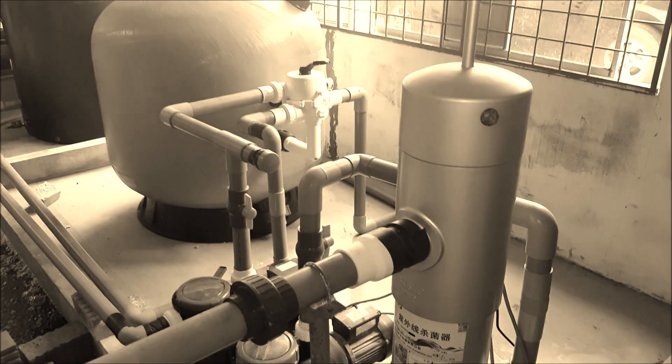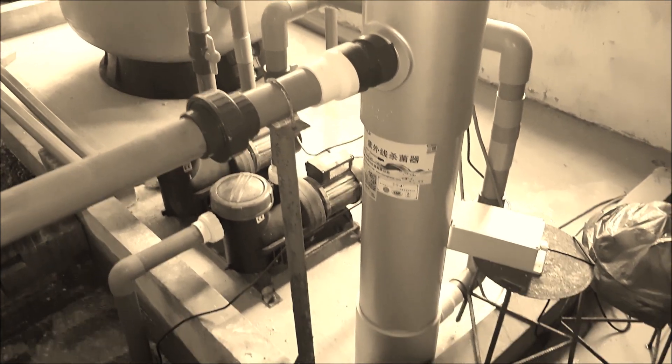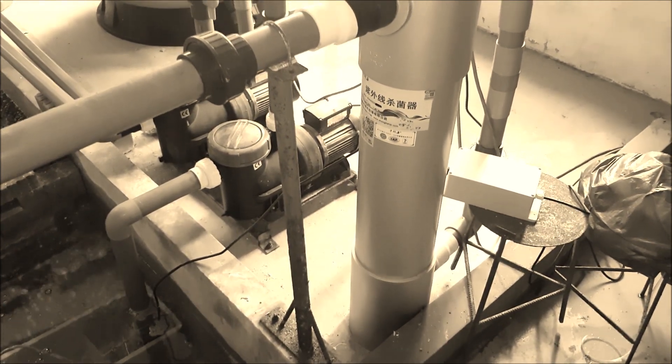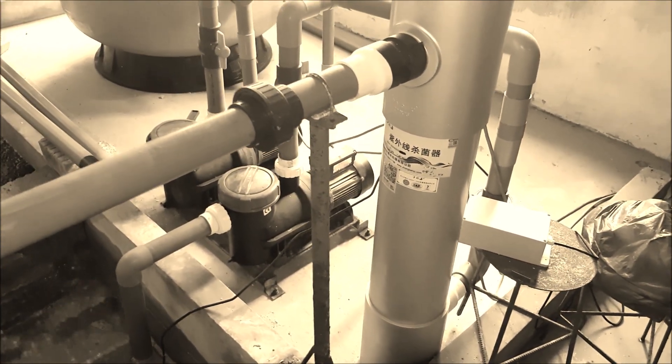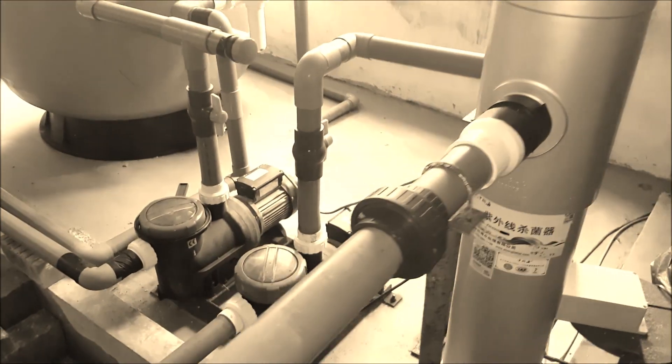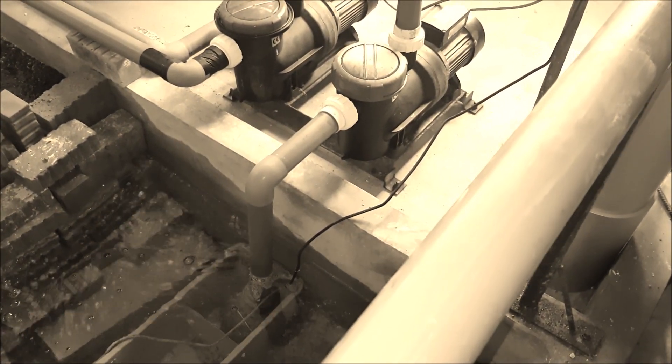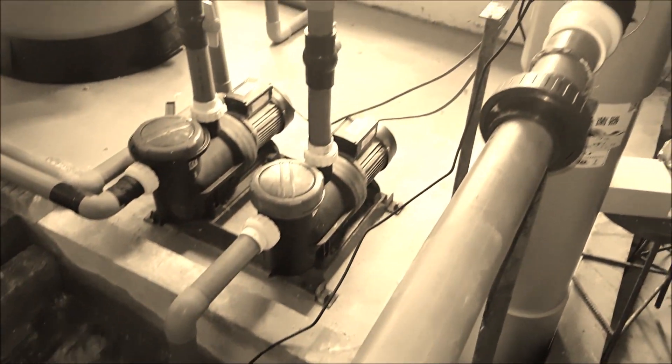Previously we have shown you the theory of operations and an animation of how this UV light actually works and how it's being constructed using glass sleeves. The glass is used to separate the electrical connections from the water.